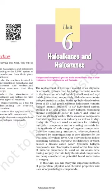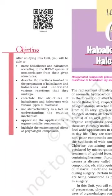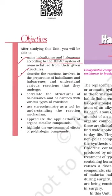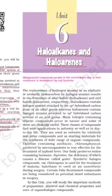Today we are going to discuss haloalkanes and haloarenes. The things we need to learn are: first, the names of haloalkanes and haloarenes including IUPAC and common names; second, the relation between preparation of haloalkanes and haloarenes; third, the correlation between haloalkanes and haloarenes and their types of reactions; fourth, the use of stereochemistry to understand the reaction mechanism; and fifth, the application of organometallic compounds and environmental effects.